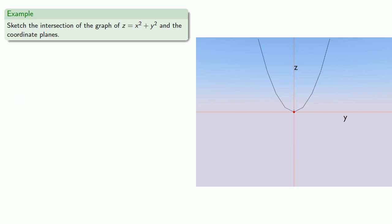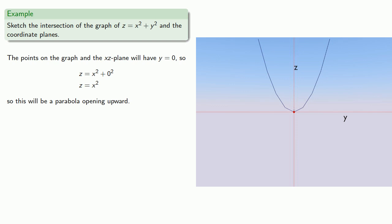And if I want to look at the points on the graph and the xz plane, well, that will have y equals zero, giving z equals x squared. This will look like a parabola opening upward. So again, moving around to face the xz plane, graphing our parabola. And if we want to look at this in three dimensions.